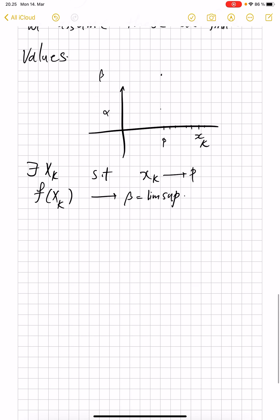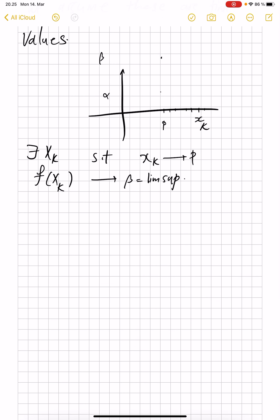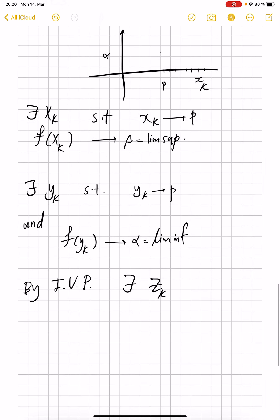Depending on what definition of lim sup you mean, this is either the definition or just an easy corollary. And at the same time, there exists some other sequence which approaches p, and f(y_k) values go toward the lim inf. By intermediate value property there exists a third sequence. For every x_k, y_k with the same index there is some z_k between them such that...